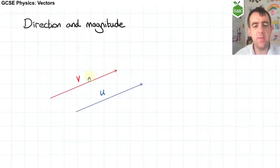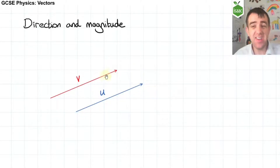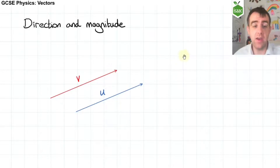It doesn't matter where we draw a vector. If the length of the vector is the same and the direction of the vector is the same, then it's the same vector. So in this picture here, the u and the v are the same vector.